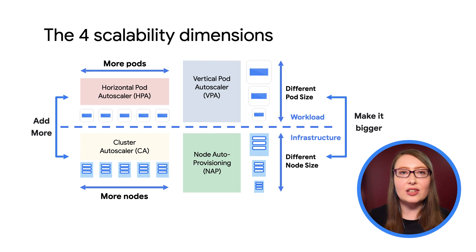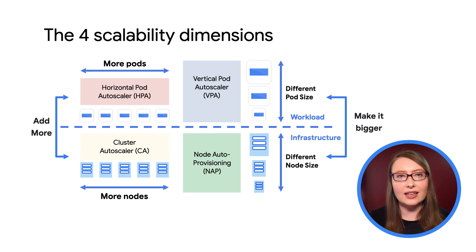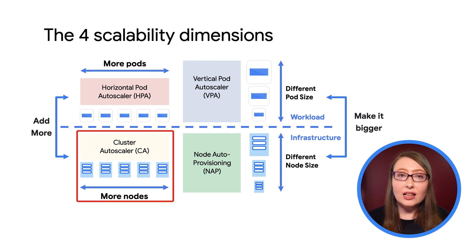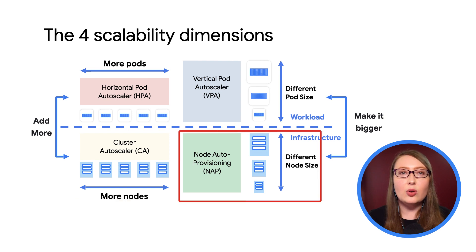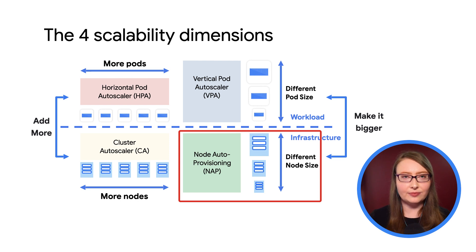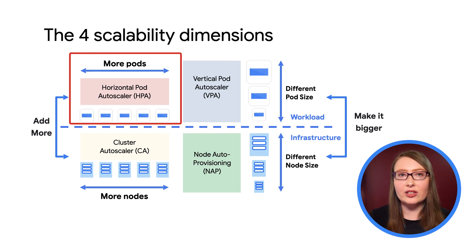Autoscaling provides a way for you to set up your clusters to optimize themselves automatically. In GKE, there are four dimensions of autoscaling you should think about. The Cluster Autoscaler can increase or decrease the number of virtual machines in your cluster according to demand. The Node Autoprovisioner can automatically pick the right size of virtual machines for your workloads.